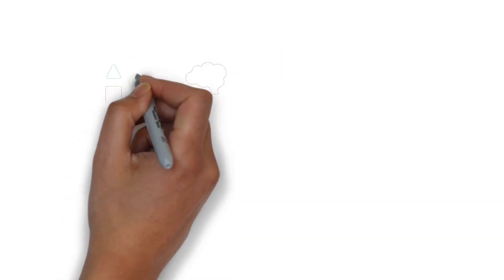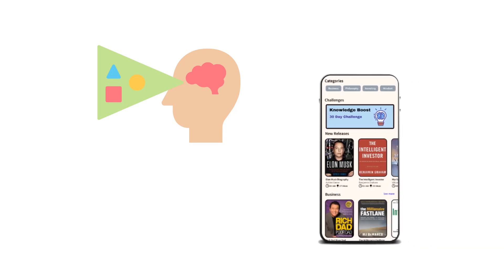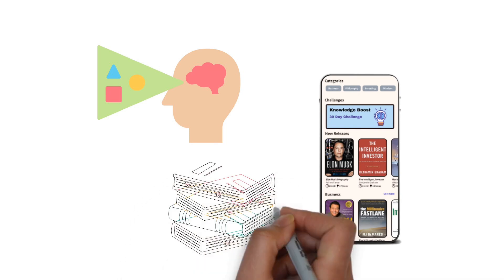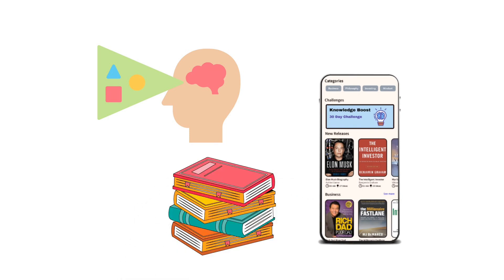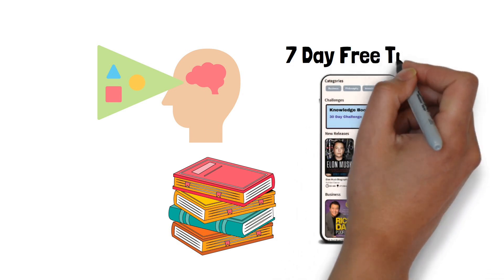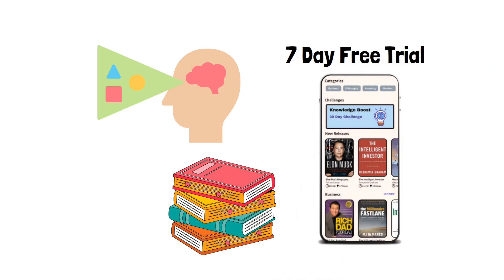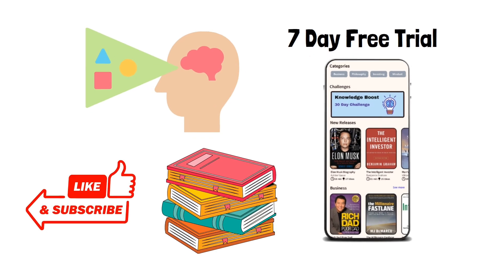Before we dive into the first idea, if you are a visual learner, you have to check our app, Morphosis. We have animated book summary videos for the best self-development and business books. Click the link in the description to get a seven-day free trial and learn from hundreds of animated book summaries. And don't forget to like this video and subscribe to our channel so you get notified when we upload free videos.